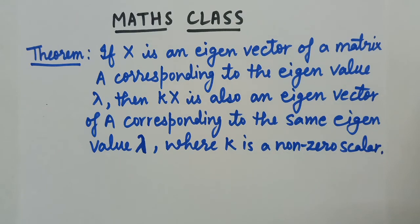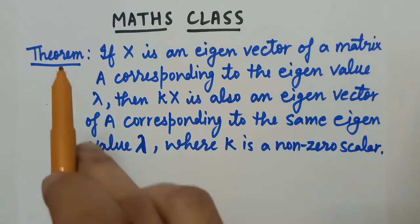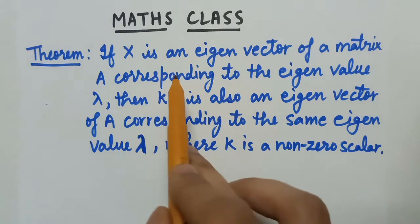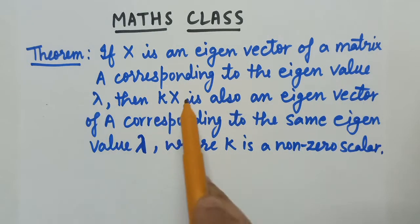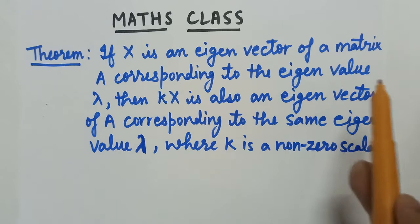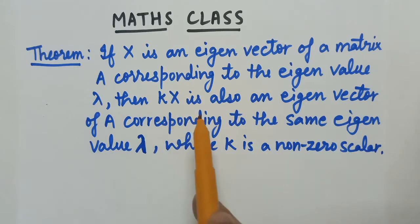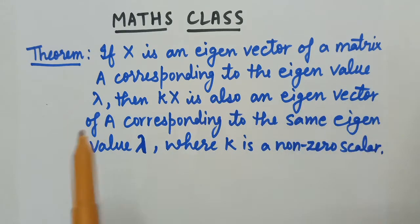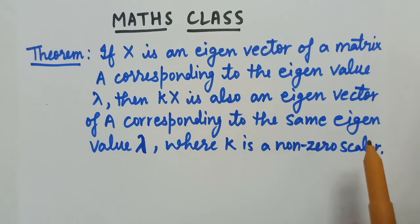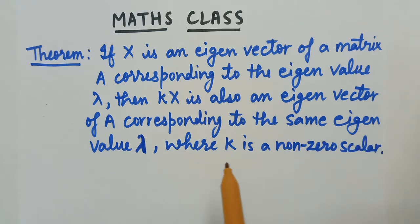Hello guys, welcome to learning class. Today in math class we are going to do a theorem which states that if x is an eigenvector of a matrix A corresponding to the eigenvalue lambda, then kx is also an eigenvector of A corresponding to the same eigenvalue lambda, where k is a non-zero scalar.